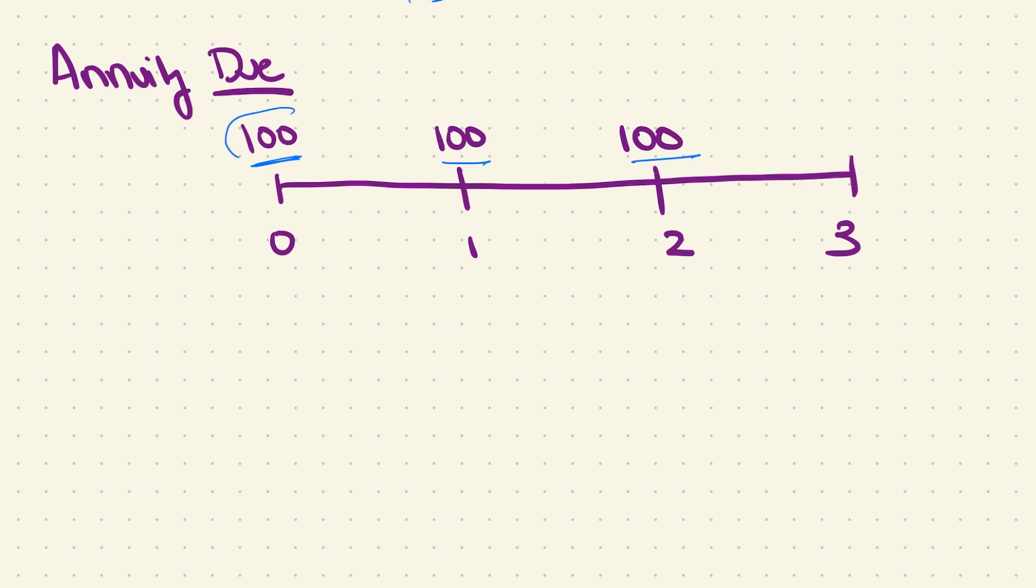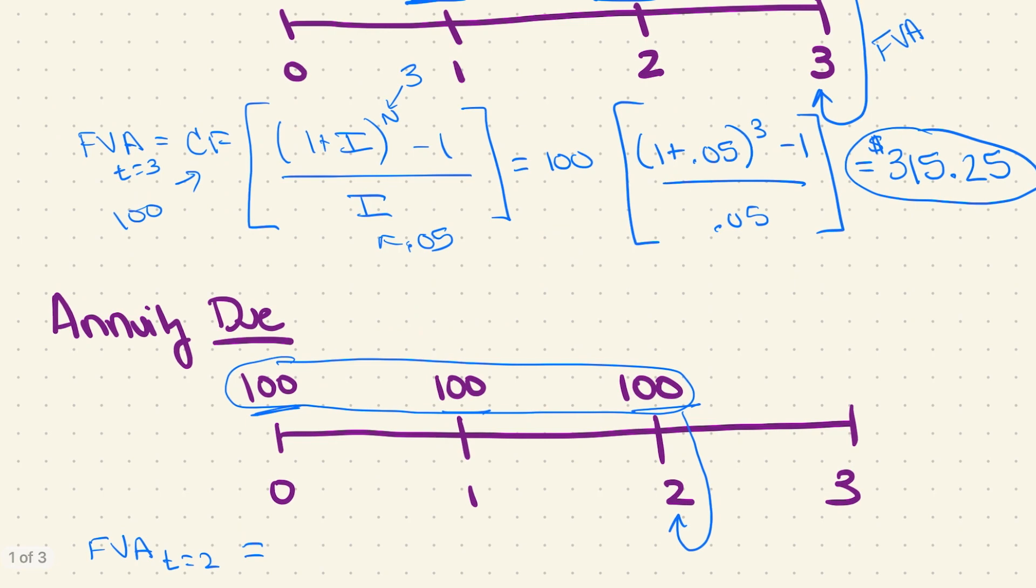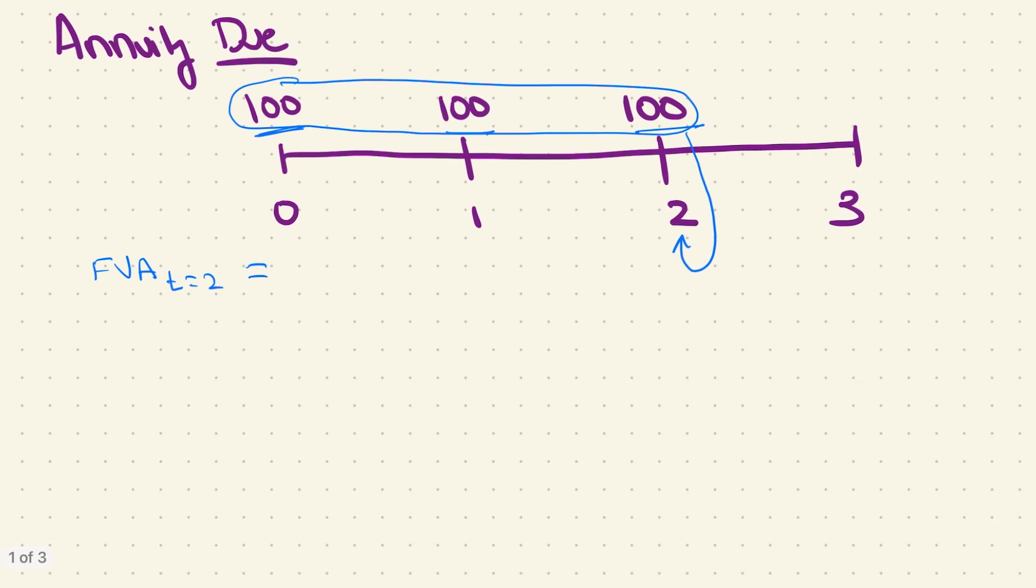So if again, I group these three together as an annuity and I calculate the future value of this annuity, it's going to take me to the time period of the last cash flow. So my equation would be the future value of the annuity at t equals two equals, it's actually going to be the exact same thing we wrote up here because we have three cash flows, our rate is 5%, and the cash flow is $100, but now there's a second step that I have to do because I don't want to know the future value in t equals 2, I want to know the future value in t equals 3.